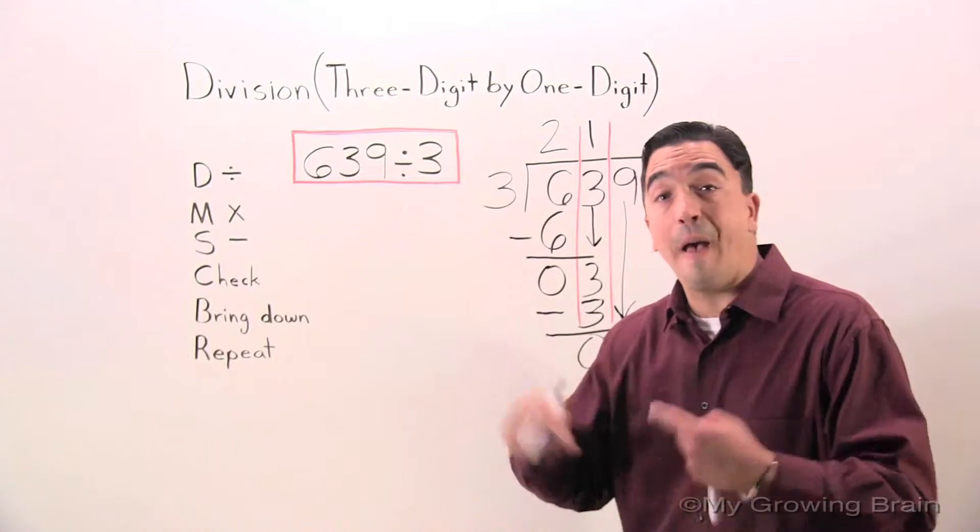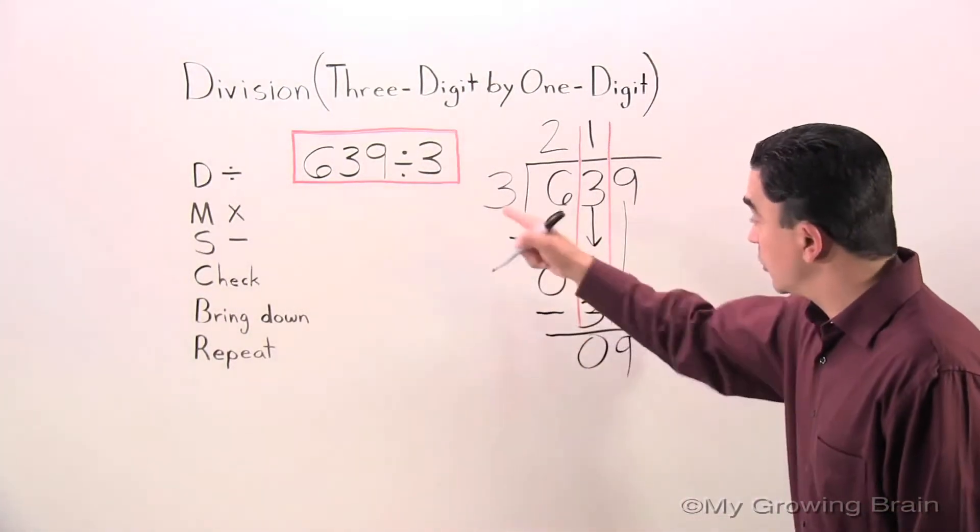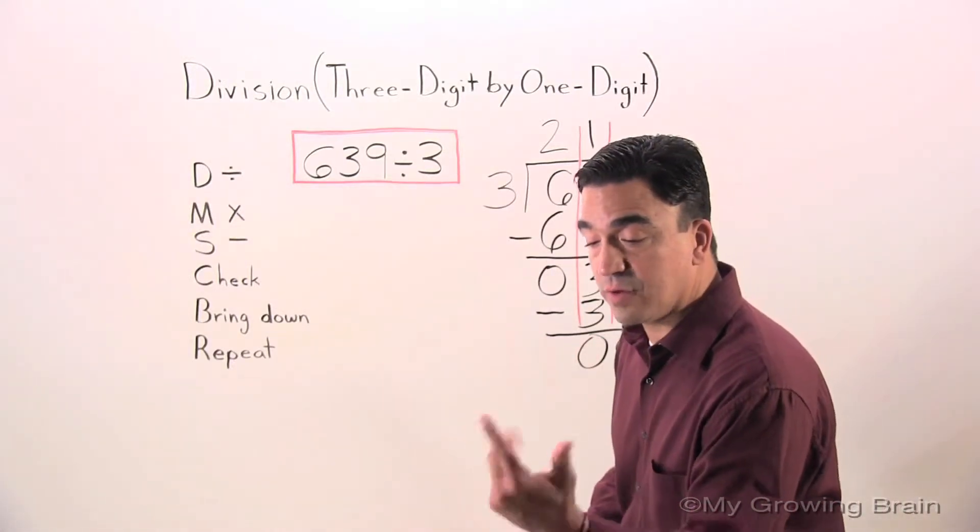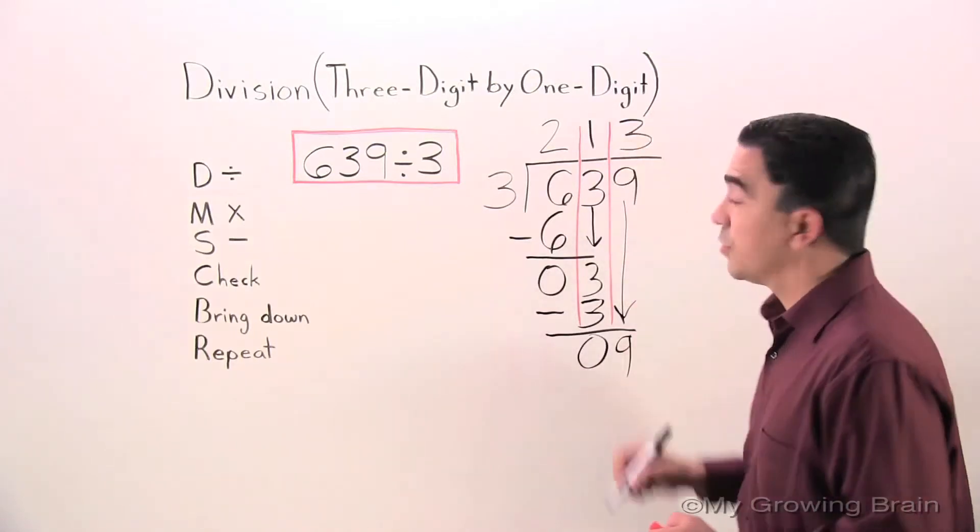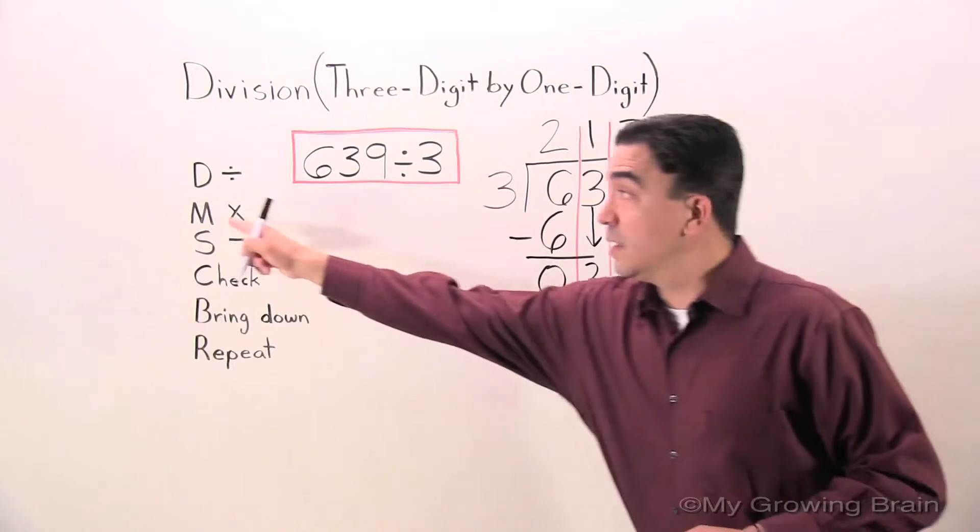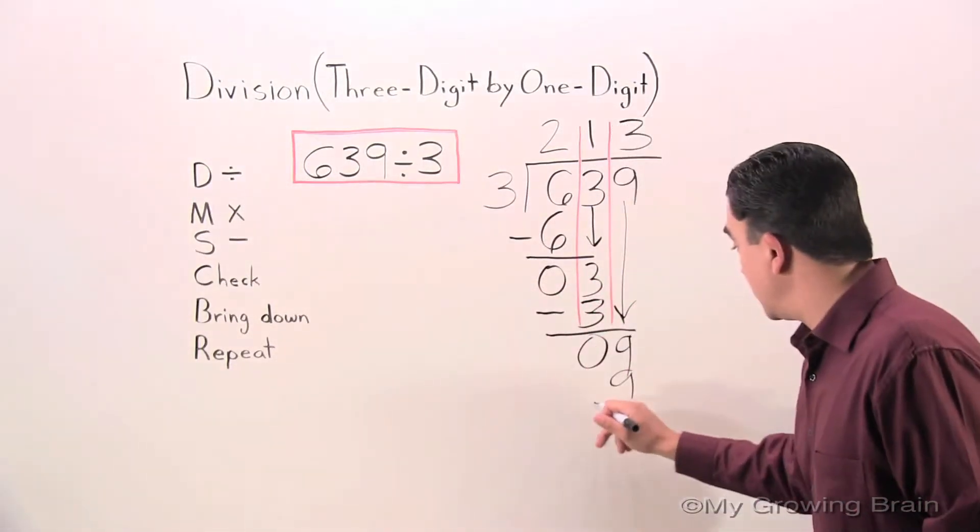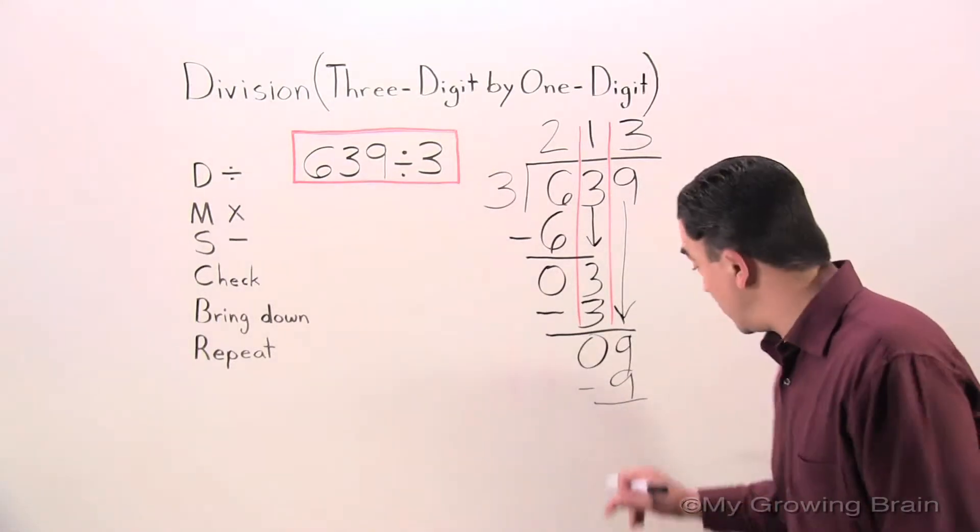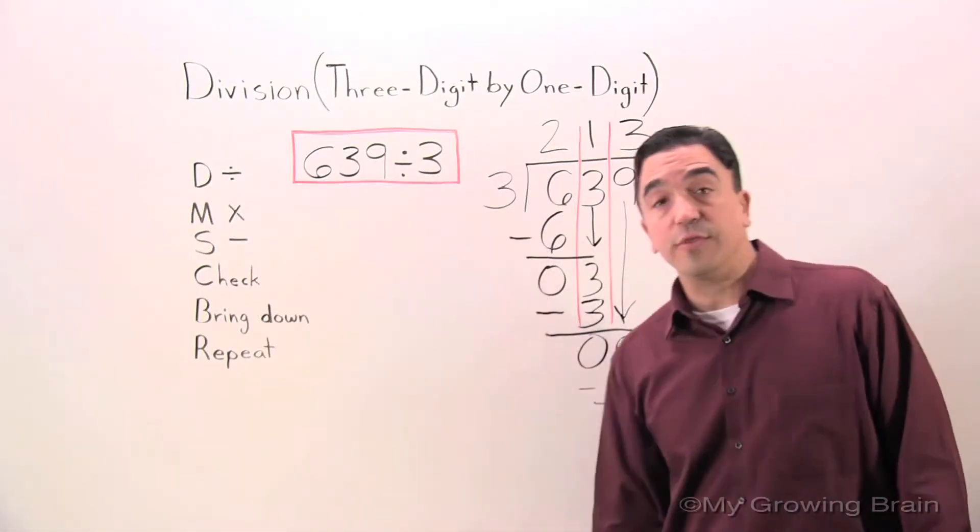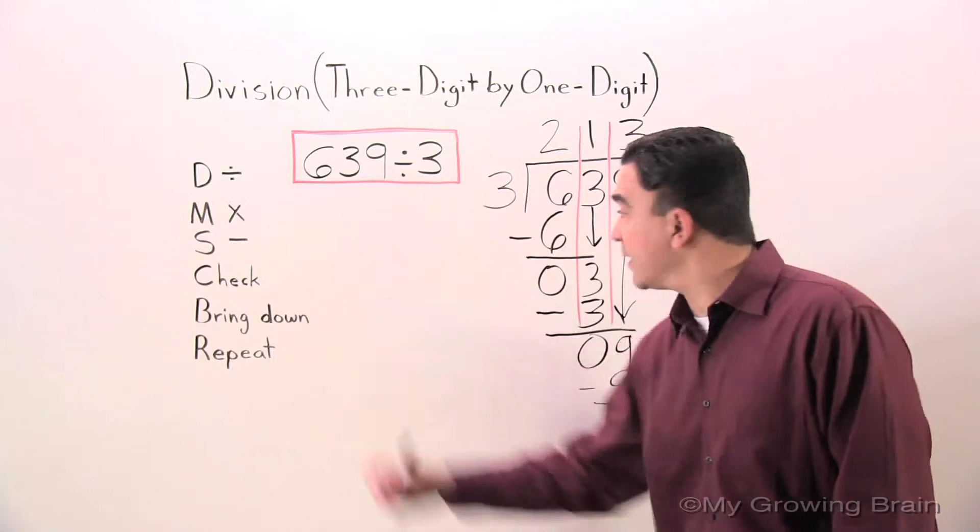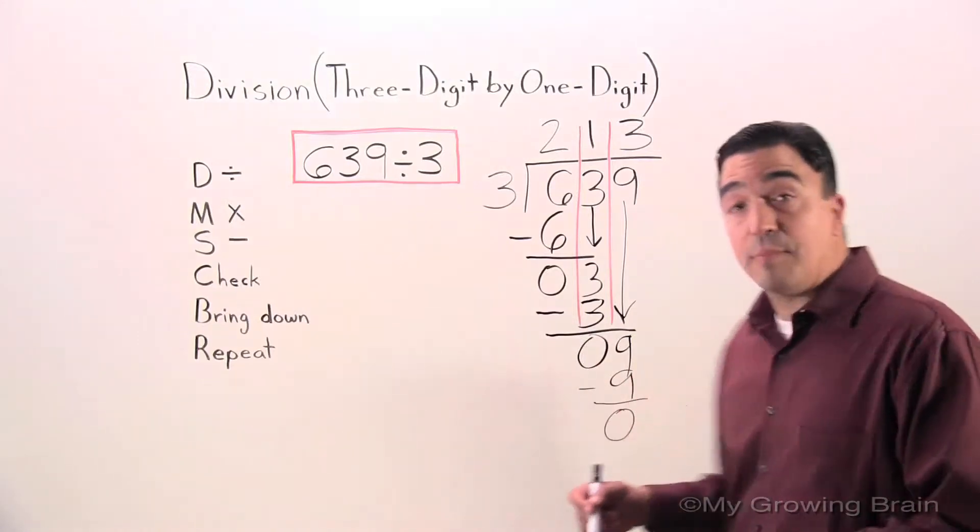Repeat the process. Back to the top. D for division. 3 goes into 9? 3, 6, 9. 3 times. 3 times 3? 9. Multiply. 9. Subtract. 9 minus 9, 0. Check. Is the 0 less than the 3? Yes. Keep on going. Bring down. Uh-oh. Nothing there to bring down. We have just completed the problem.